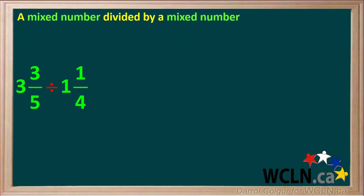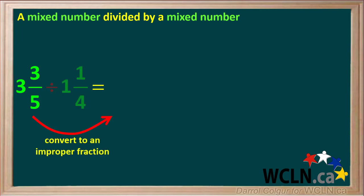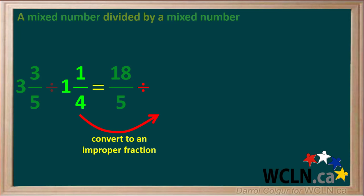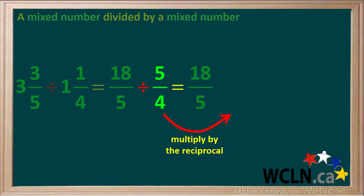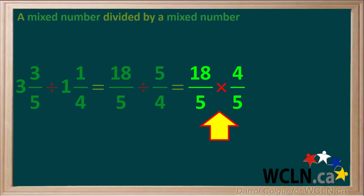The last example we'll do is a mixed number divided by another mixed number: 3 and 3 fifths divided by 1 and a quarter. Pause the video and try this on your own first, then resume the video and check your answer. We'll start by converting 3 and 3 fifths to an improper fraction, which comes out to 18 over 5. Then we'll convert 1 and 1 quarter to an improper fraction, which comes out to 5 over 4. So our question is 18 over 5 divided by 5 over 4. Dividing by the fraction 5 over 4 is the same as multiplying by its reciprocal, which is 4 over 5. So our question now becomes 18 over 5 times 4 over 5.